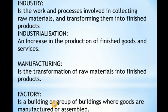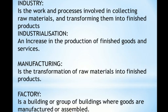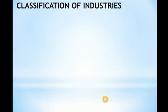A factory is simply a building or a group of buildings where goods are manufactured or assembled. There is a key term here: 'assembled,' which means putting different parts together to form one finished product. We will look at more details about assembling later in the topic. Now let's move to the classification of industries — there are basically four main classifications.